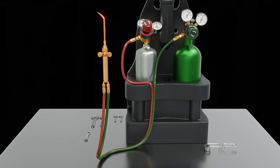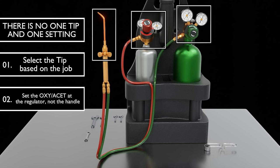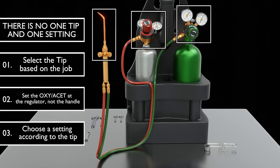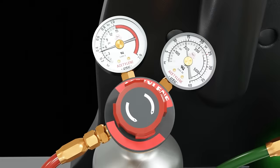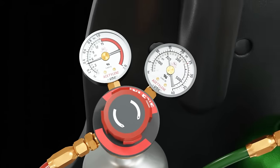As I mentioned before, there's no one tip and setting. Select the tip based on the job. Then set the oxygen and acetylene at the regulator, not at the handle. At the handle, the knob should be almost fully open. You can make very fine adjustments at the handle, but in general, it shouldn't be how you set your flame. Turn clockwise for higher outlet pressure on your regulator, and counterclockwise for lower outlet pressure.